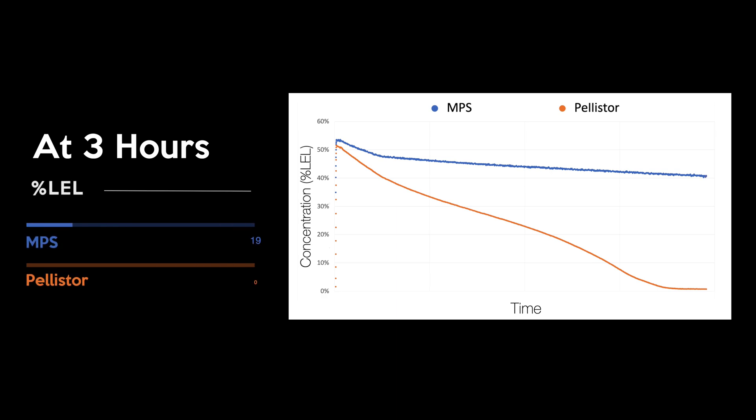At three hours, the pellistor reads 0% LEL while the MPS is reading 40% LEL.